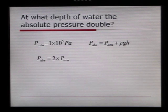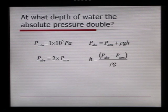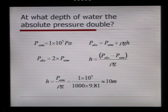So, the absolute pressure that would be acting on you at that depth would be twice atmospheric. And h, therefore, can also be shown to be P absolute minus P atmosphere divided by rho g. Combining the two, we can see that the h is equal to 1 by 10 to the 5 divided by 1,000, and also divided by 9.81, which is equal to 10 metres.